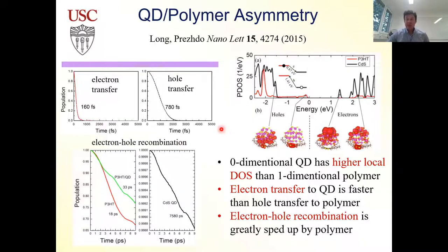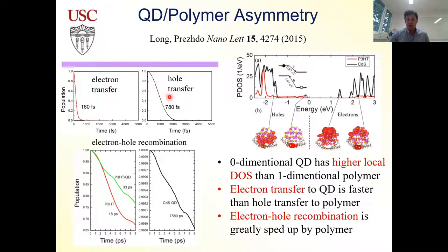Putting the same polymer on a quantum dot, which is zero-dimensional: while the polymer is 1D, locally the quantum dot behaves almost like bulk material with much higher density of states, and the polymer interacts with the QD almost like a small molecule. You get faster electron transfer and slower hole transfer — faster from molecule to QD, slower from QD to molecule. Also interesting: because quantum dots are made of heavy elements, charge recombination in the polymer-QD system is much faster than in the QD alone due to lighter atoms and faster motions in the molecule.